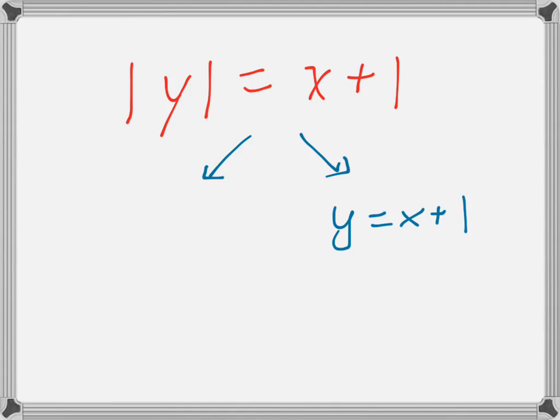One more example. If you have the absolute value of y equals x plus 1. Now this is a little bit harder because you can't really undo the y. Well, actually, you kind of can undo the y. Remember the rule for when you have an absolute value? How do you solve it? How do you get rid of the absolute value? You write it two ways. You write either y equals x plus 1 or negative y equals x plus 1.